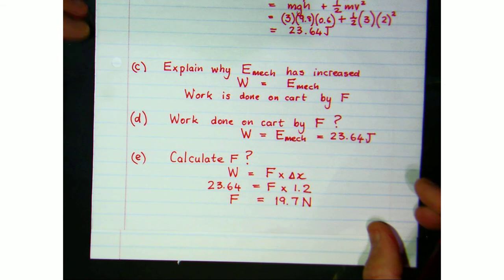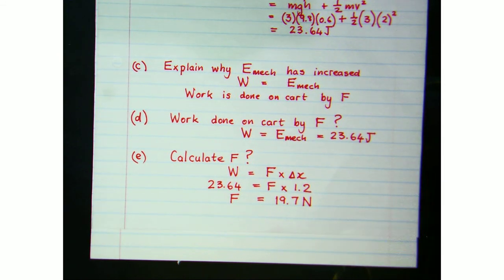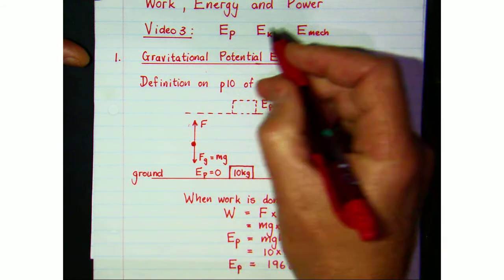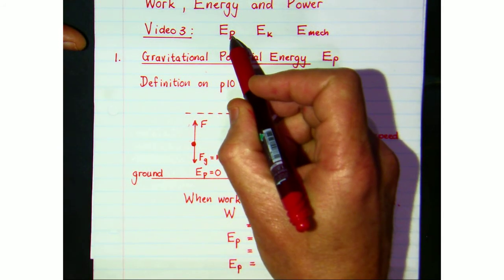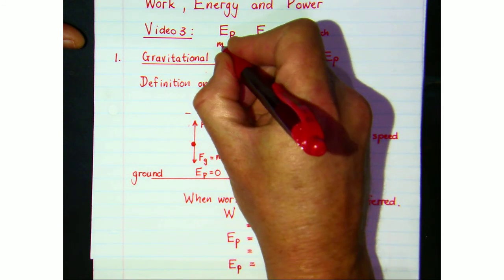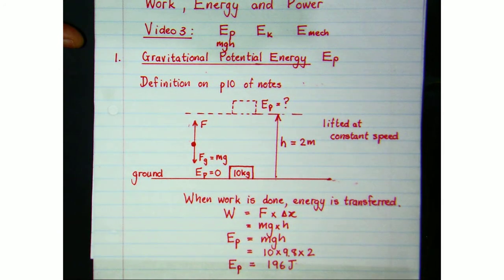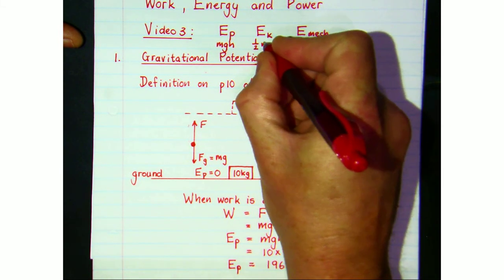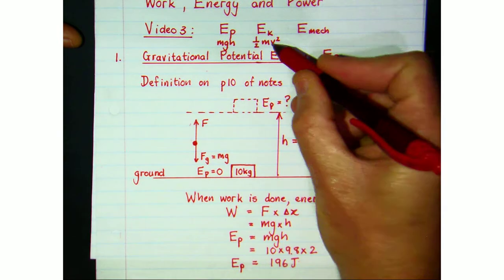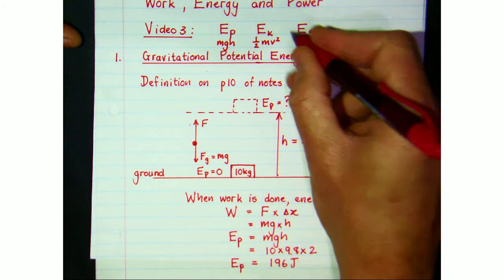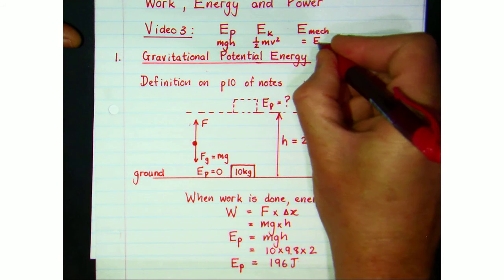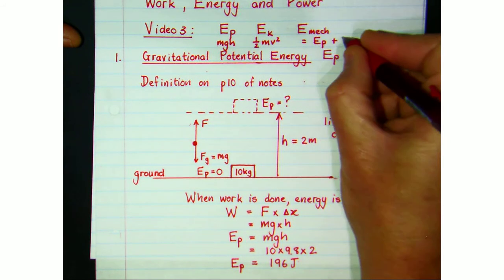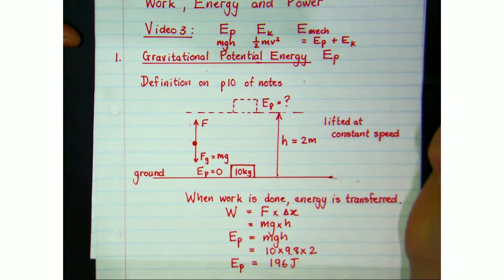Let's summarize quickly. In this video we looked at gravitational potential energy, which depends on mass, gravitational acceleration, and height above the ground: EP = mgh. Kinetic energy requires an object to be moving, with formula EK = ½mv², where v is the speed of the object. To calculate total mechanical energy, we add gravitational potential energy and kinetic energy — both are scalars, so we simply add them without worrying about direction.